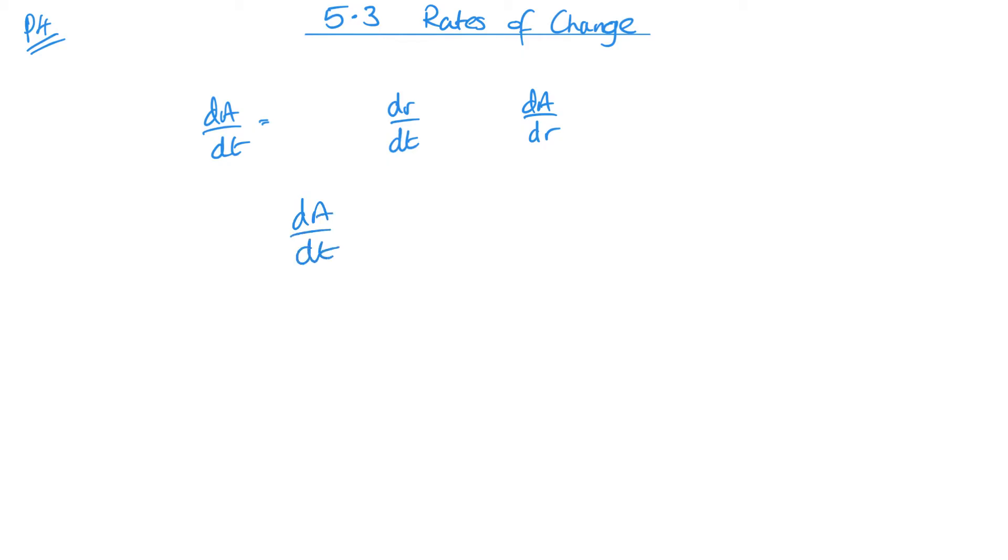For example, the dA/dt would be the same as dA/dr multiplied by dr/dt, which would obviously be this one flipped around. And you can see these would cancel, leaving me dA/dt. That's just an example, a very quick example of what we're talking about, but I think it makes way more sense if we do it with an actual question.